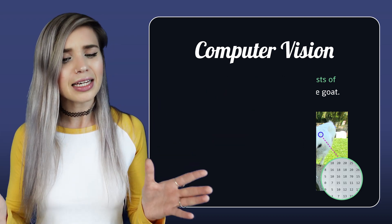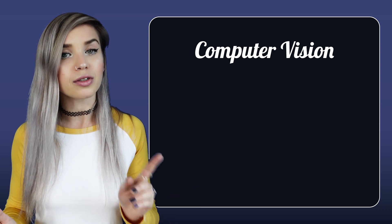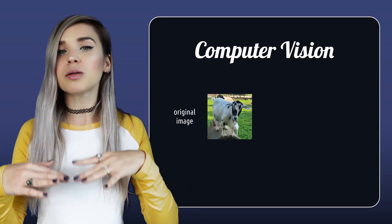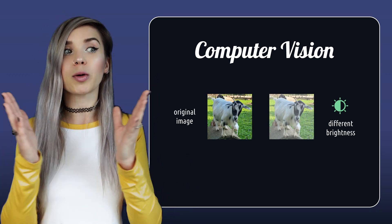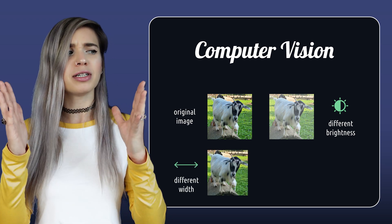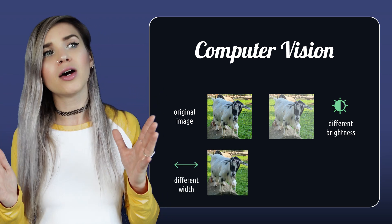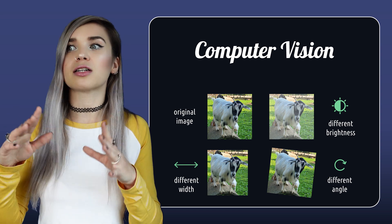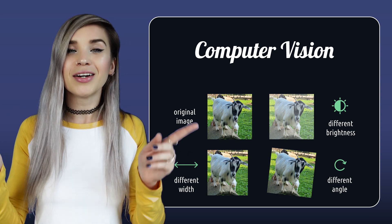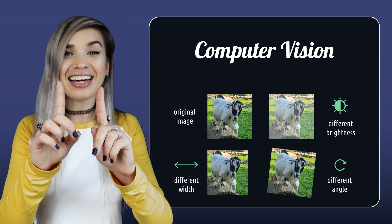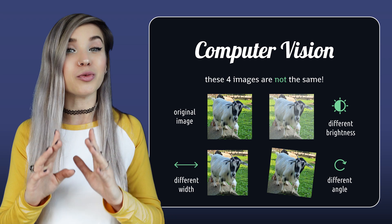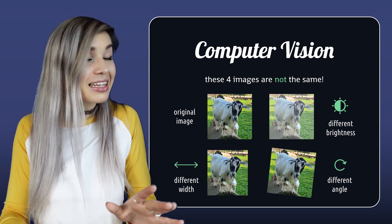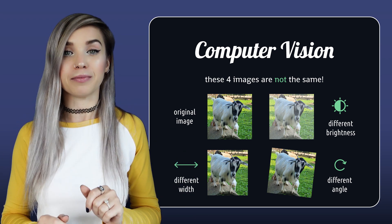And even if we use the original photo but slightly boost the brightness, or maybe crop 5 pixels from the width, or even just rotate it 5 degrees clockwise, we still get a brand new array of numeric values that has nothing to do with the original one.